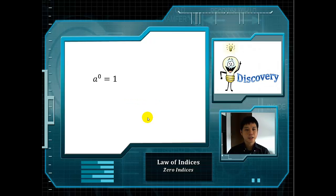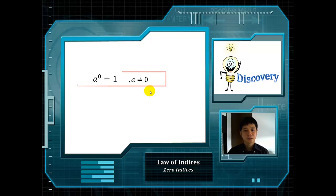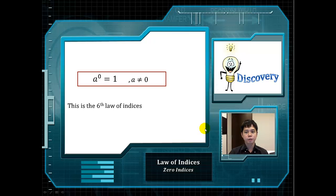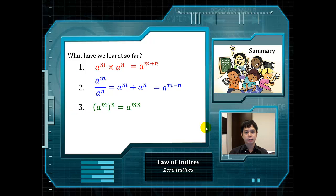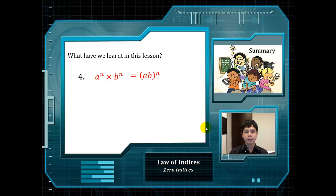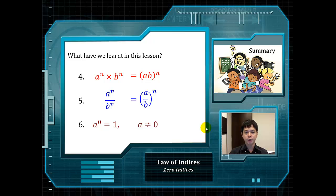Previously, we found out that a to the power of 0 equals to 1. Now we know that a cannot be equal to 0, otherwise it will be undefined. Therefore, anything to the power of 0 will be equal to 1, and this is our sixth law of indices. Previously, we had three laws of indices with the same base, then two laws with the same powers, and now we have learnt that a to the power of 0 equals to 1 — any number or unknown to the power of 0 equals 1, provided a is not 0. Do remember to watch the next video on negative indices.